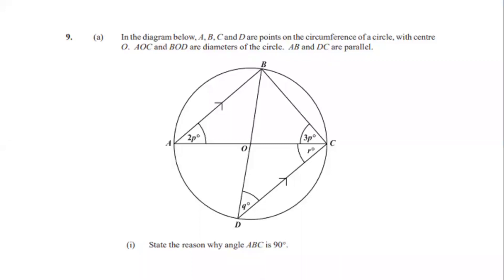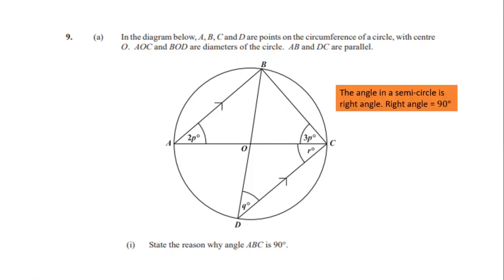Part 9a says: in the diagram below, A, B, C and D are all points on the circumference of a circle with center O, and AOC and BOD are diameters of the circle, and AB and DC are parallel. Part one says state the reason why angle ABC is 90 degrees. The angle in a semicircle is a right angle, and therefore a right angle equals 90 degrees — that is why angle ABC is 90 degrees.